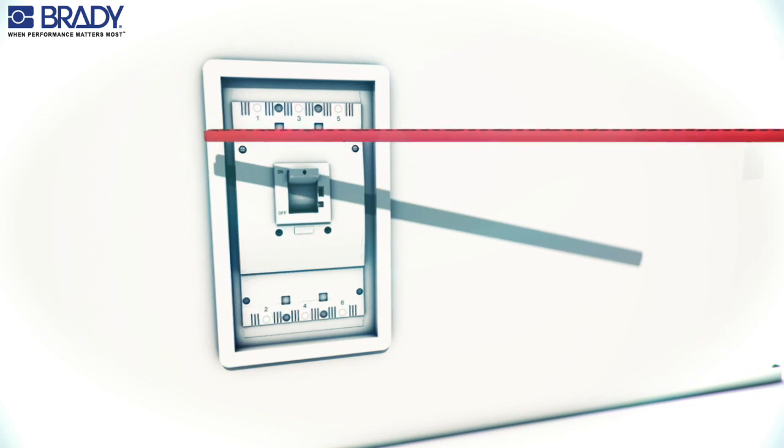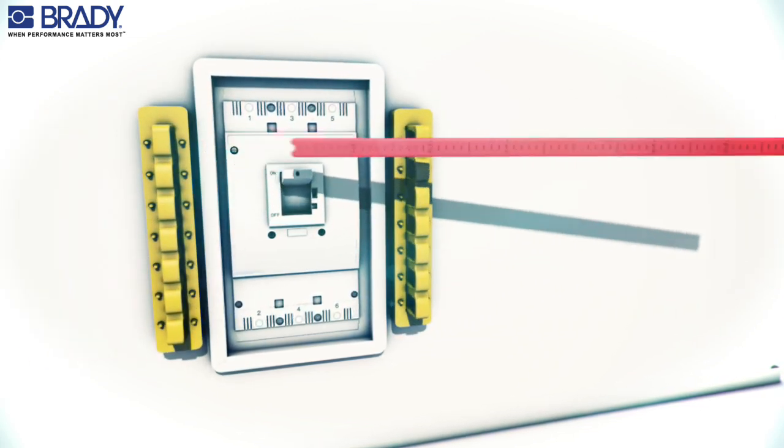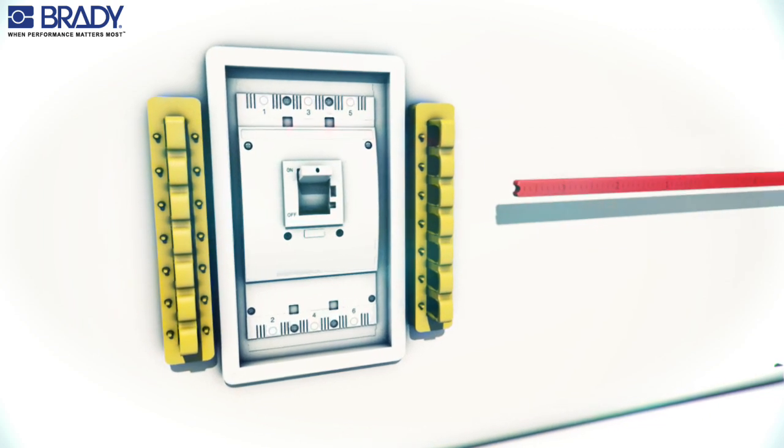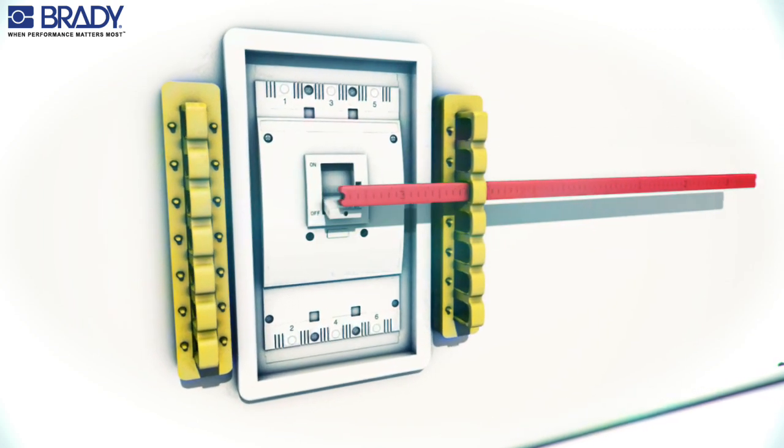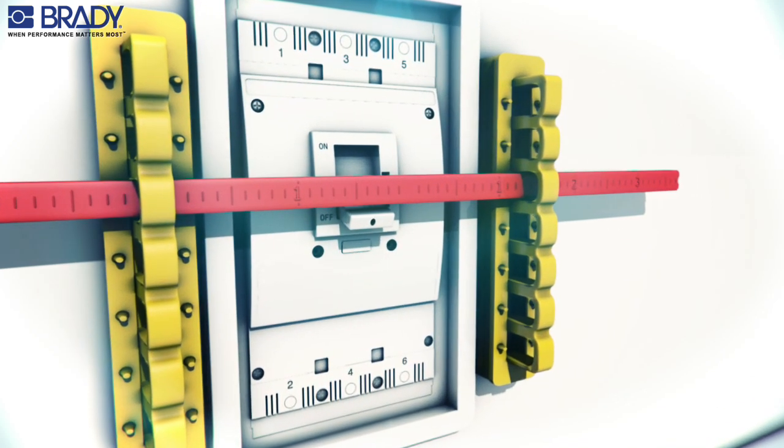The red bar is used to lock the switch in the off position during lockout or tagout applications. Position the red bar through the yellow mounting rails and against the switch when it is in the off position. Verify that the switch cannot be thrown.